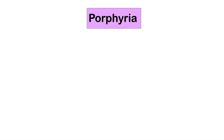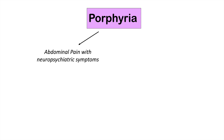Porphyrias are rare and often misunderstood medical conditions caused by mutations in enzymes in the heme synthesis pathway. In this lesson, we're going to look at an in-depth overview of one of the most prominent porphyria conditions known as acute intermittent porphyria. To begin, I just want to look at a broad overview of porphyria conditions in general.